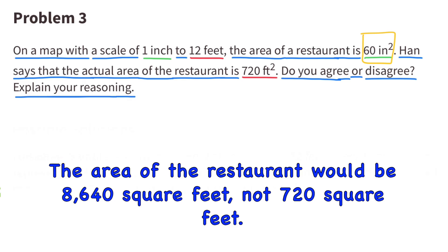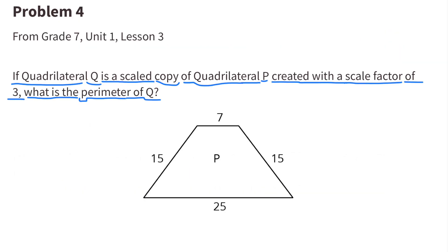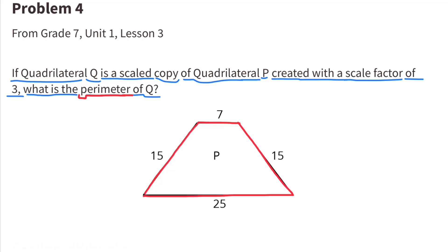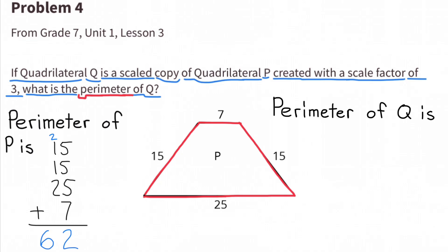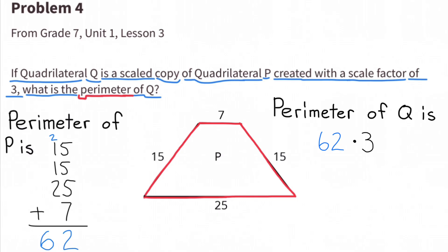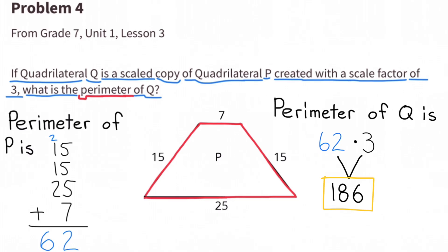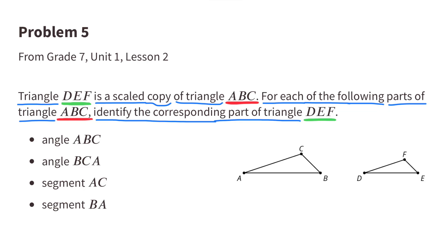Number four: if quadrilateral Q is a scaled copy of quadrilateral P created with a scale factor of 3, what is the perimeter of Q? I've outlined the perimeter in red. The perimeter of quadrilateral P is 62 by adding up all the side lengths. The perimeter of quadrilateral Q is 62 times 3, since it was created with a scale factor of 3, and 62 times 3 is 186. The perimeter of Q is 186 units.